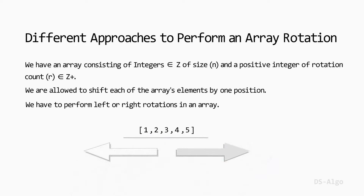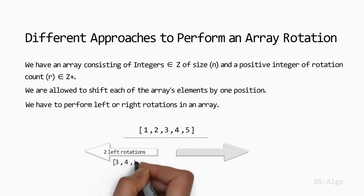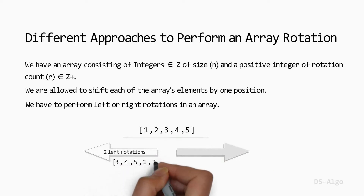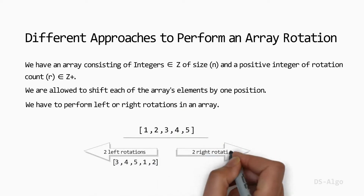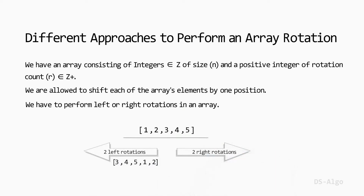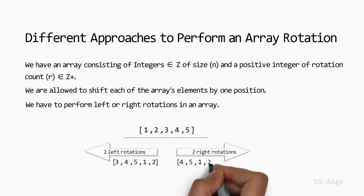If two left rotations are performed on the given array, then the array would become 3, 4, 5, 1, 2. Or if two right rotations are performed on the given array, then the array would become 4, 5, 1, 2, 3.